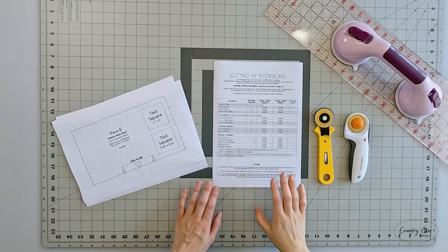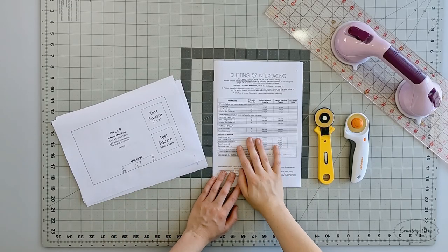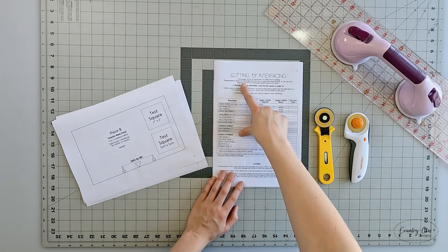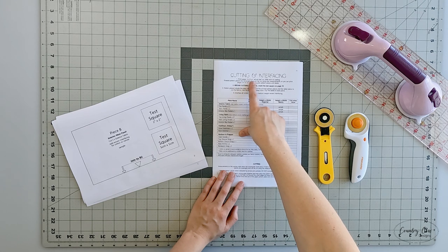Welcome to Country Cow Designs. I'm Jo, and in this video I'm going to show you how to print your pattern, piece together your pattern pieces, and cut your fabrics. The first thing you need to do is print your pattern pieces. That includes your cutting chart, which will tell you which pages you need to print if you're looking at this on the computer.